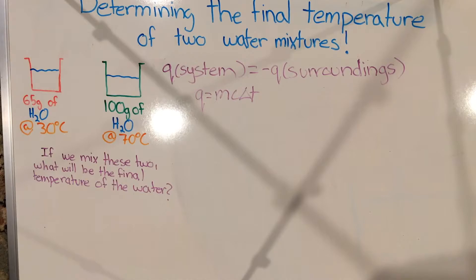We also assume that we have exactly 100 grams of water in one jug and 65 grams in the other. However, let's say these jugs are at different temperatures. Let's say that one of these jugs is at 30 degrees Celsius and the other is at 70 degrees Celsius. To be more specific, the 65 gram jug is at 30 degrees Celsius and the 100 gram jug is at 70 degrees Celsius.